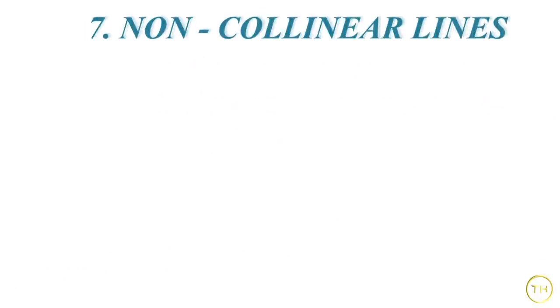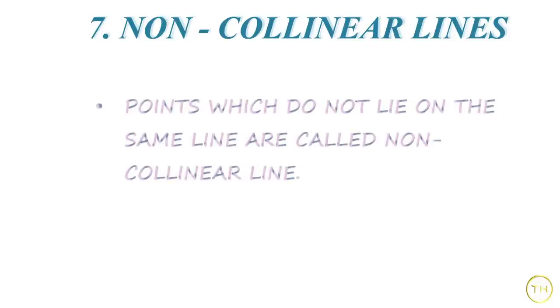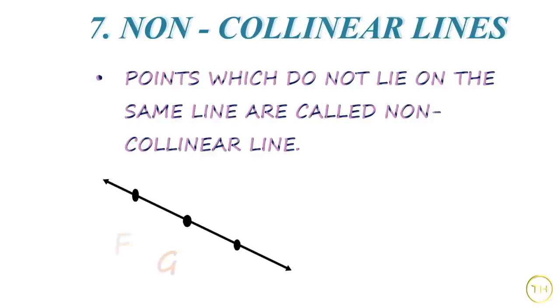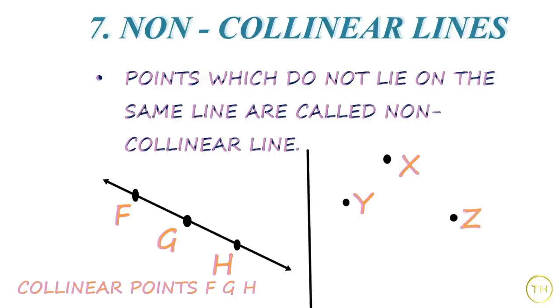Next, we are going to learn about non-collinear points. Points which do not lie on the same line are called non-collinear points. As shown in the figure above, point X, point Y and point Z do not lie on the same line. So, all the points are called non-collinear points.